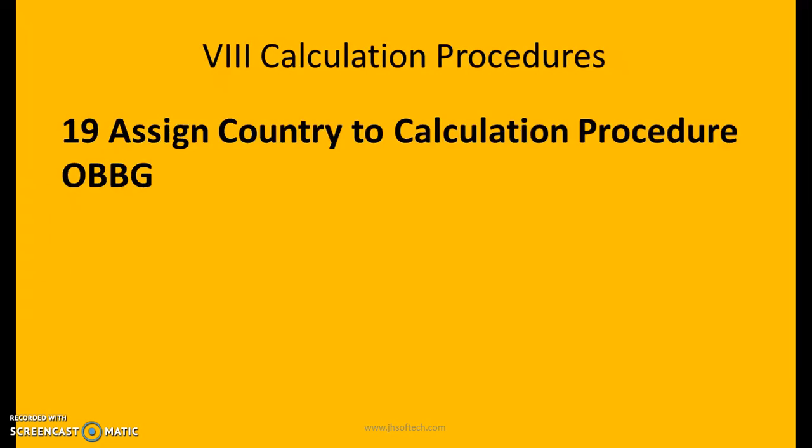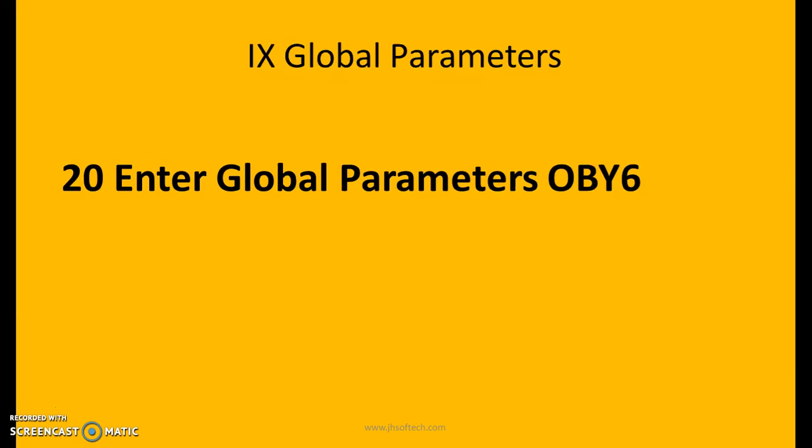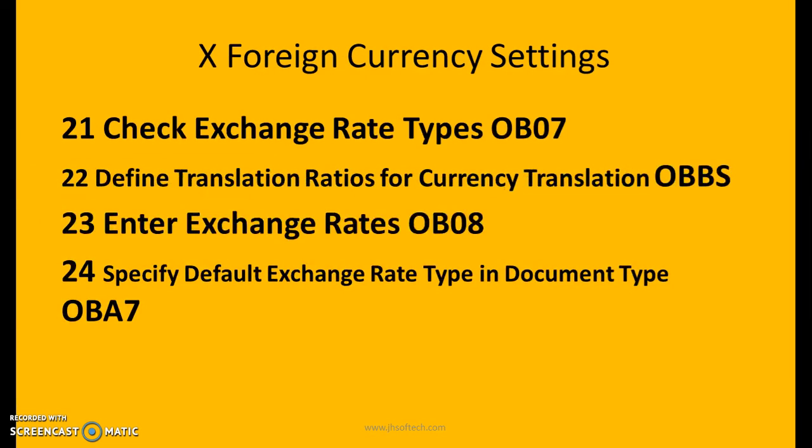For tax: assign country to calculation procedures: OBBG. For entering global parameters: OBY6. For foreign currency settings, check exchange rate types: OB07.